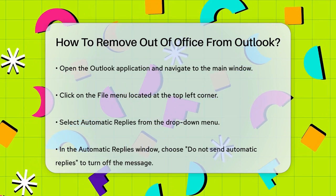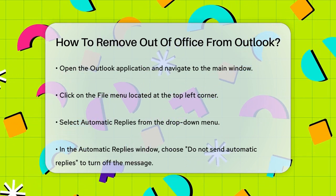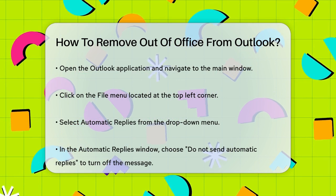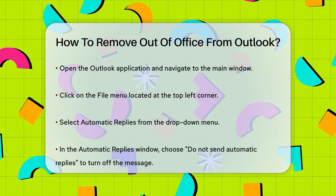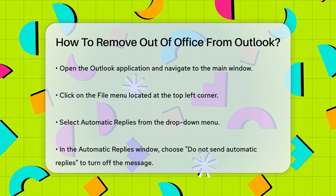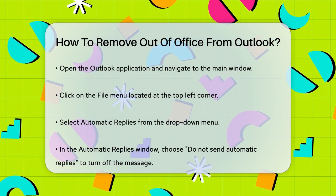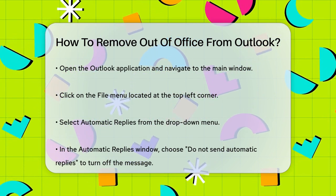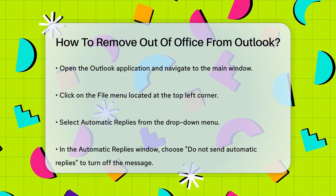First, open your Outlook application and go to the main window. Click on the File menu, which is usually located at the top left corner of the screen. From the drop-down menu, select Automatic Replies.